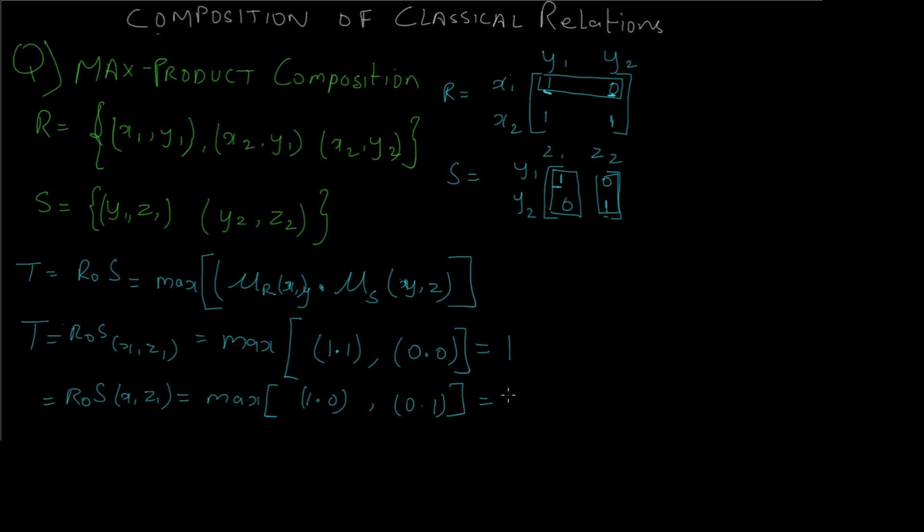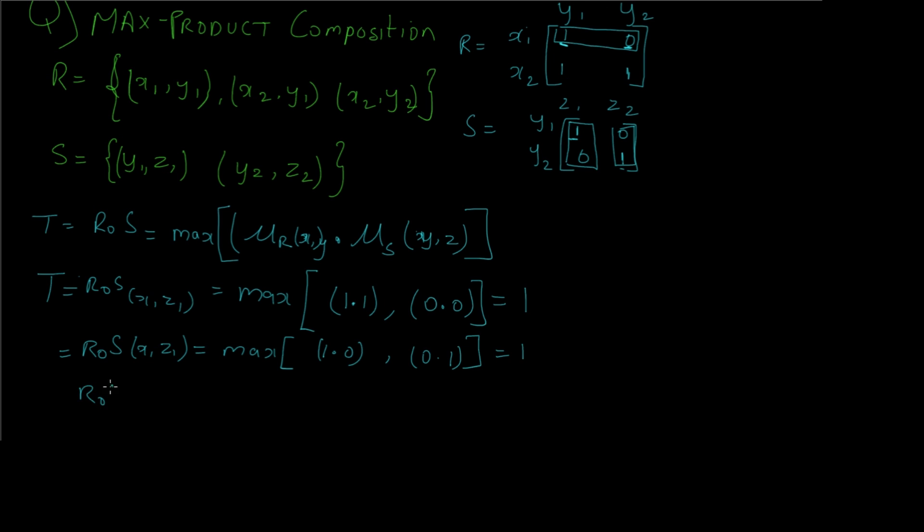So the maximum would be 1 itself. For the third term, that is (x₂,z₁), we have max of, we have to take the second row value of the first relation. So max of 1·1 and 0·1, so this would again ultimately give us value 1.